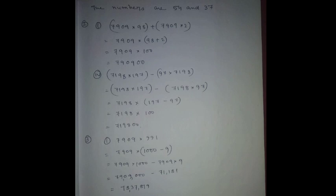Number 3: 7999 into 991. You can write 991 as 1000 minus 9, so 7909 into 1000 minus 7909 into 9, which is 79,09,000 minus 71,181. The answer is 78,37,819.